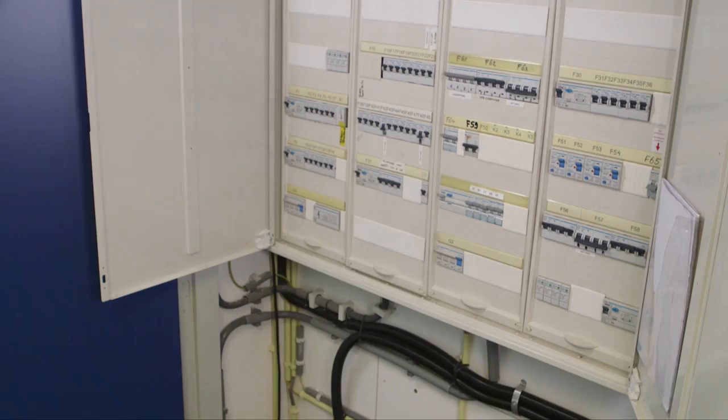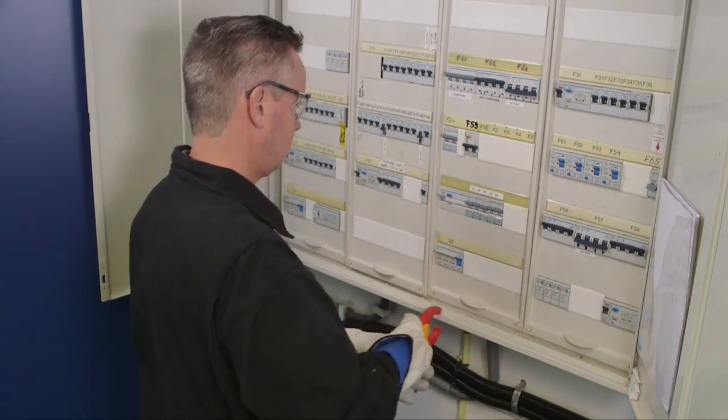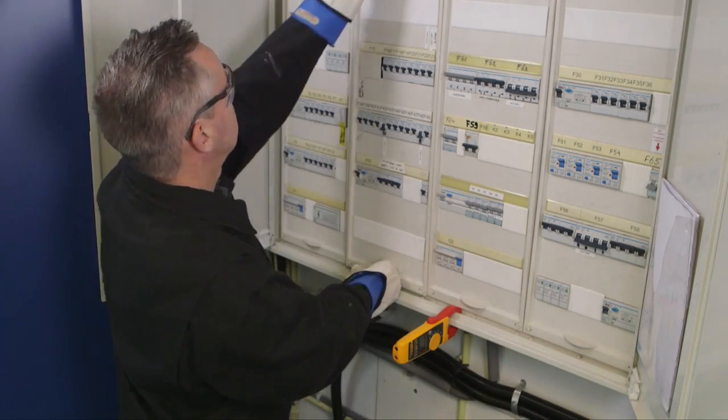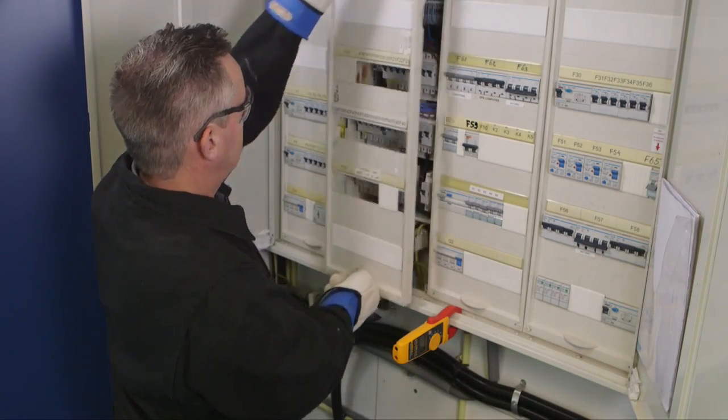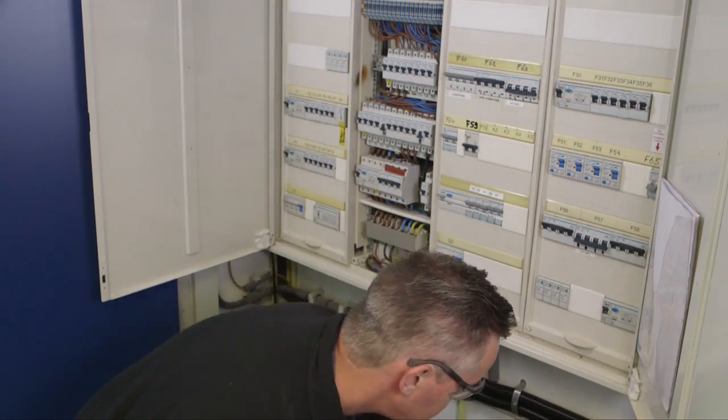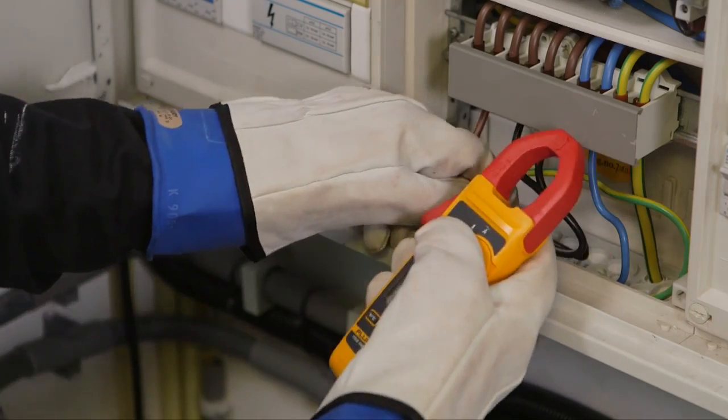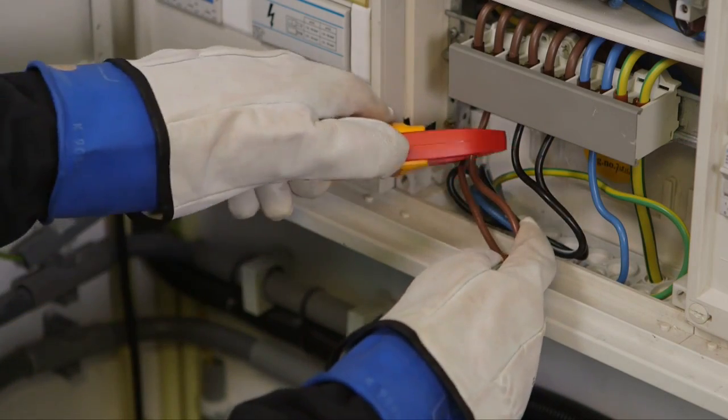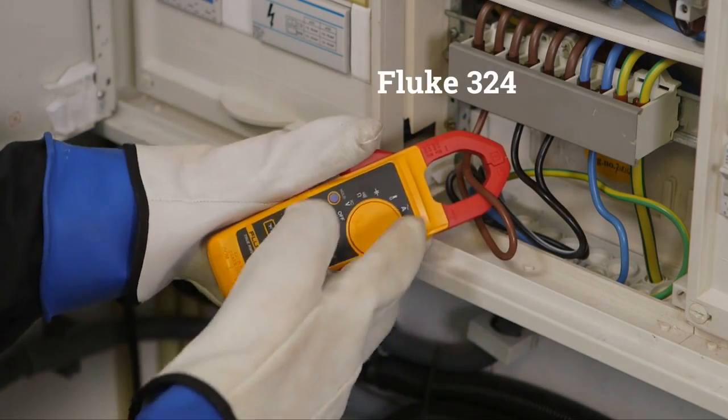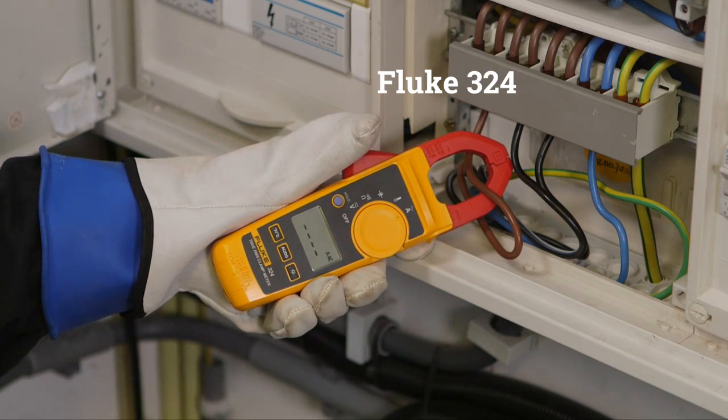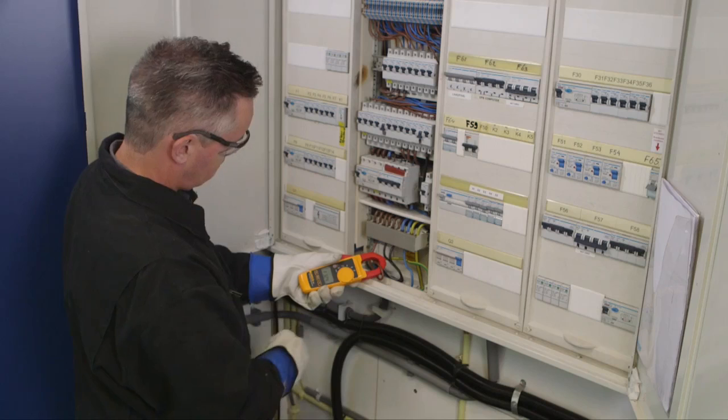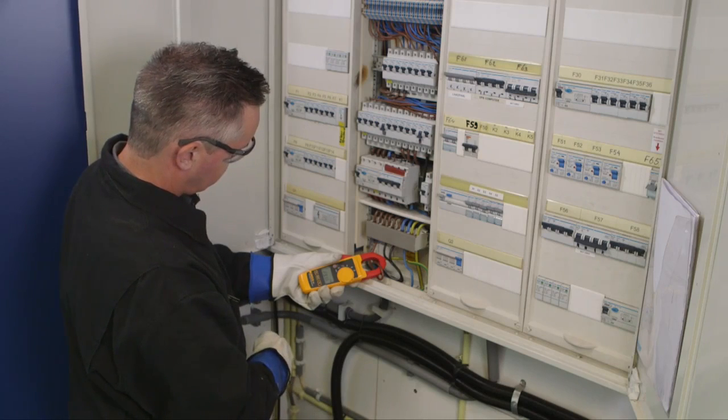The Fluke 324 clamp meter is an ergonomic troubleshooting tool for commercial and residential electricians. It's designed to verify the presence of AC current, AC voltage and continuity of circuits, switches, fuses and contacts. The Fluke 324 also includes temperature and capacitance measurement capabilities to create one solid troubleshooting tool.